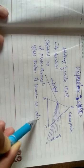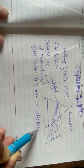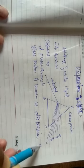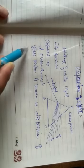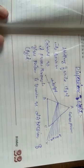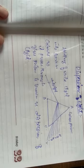So simply, the process of splitting of white light into its constituent colors is known as dispersion of light.